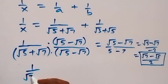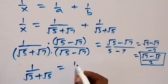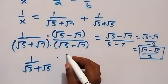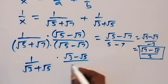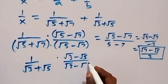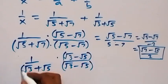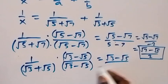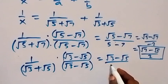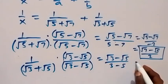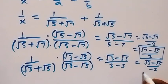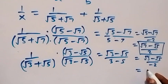Now we rationalize the second fraction: 1 over root 3 plus root 5. We multiply by the conjugate root 3 minus root 5 over root 3 minus root 5. One times root 3 minus root 5 gives root 3 minus root 5, and we divide by root 3 squared minus root 5 squared, which is 3 minus 5 equals negative 2. This gives root 3 minus root 5 over negative 2, and when we multiply through by negative, this changes to root 5 minus root 3 over 2.